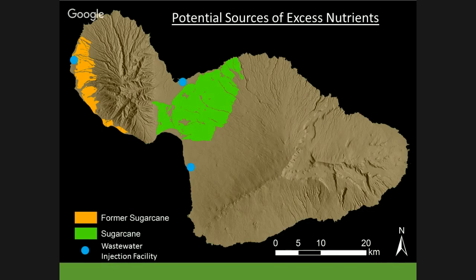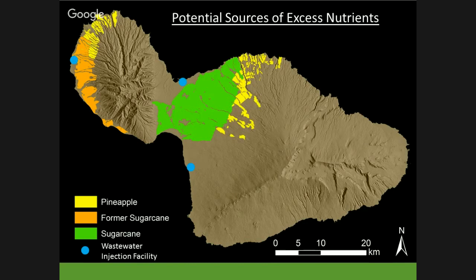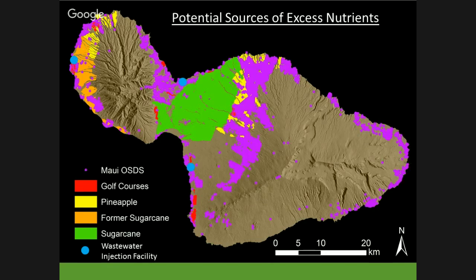There's also pineapple in yellow on the map — that ended in 2009 when Maui Pineapple Company shut their doors, but there's still a long-term effect from groundwater slowly seeping to the coastline. And of course, golf courses in red. One of the big issues Christina brought up is OSDS — on-site disposal systems — and this is a map of all OSDS systems on the entire island of Maui, all basically contributing to excess nutrients in groundwater.